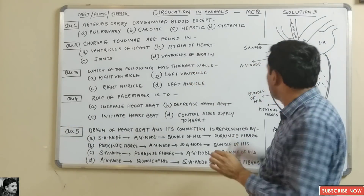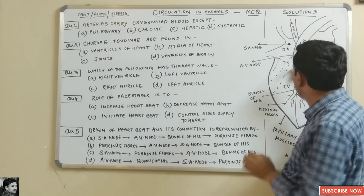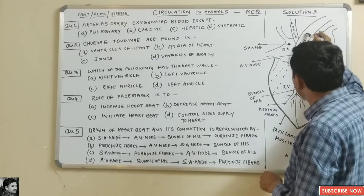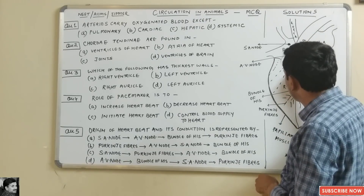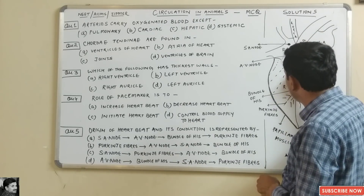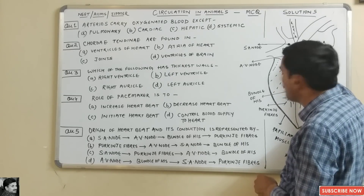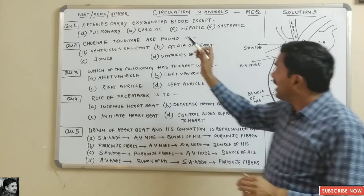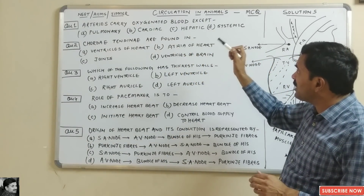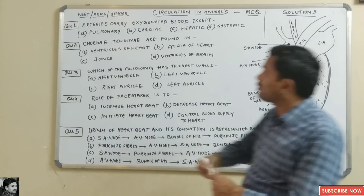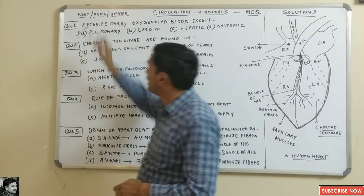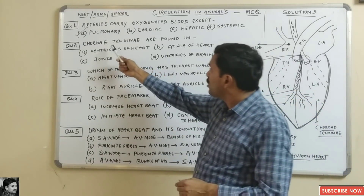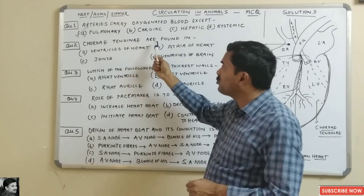This pulmonary artery arises from the right ventricle and carries impure blood from the right ventricle to the lungs for purification. So, arteries carry oxygenated blood except the pulmonary artery — the answer is the first option: pulmonary artery.